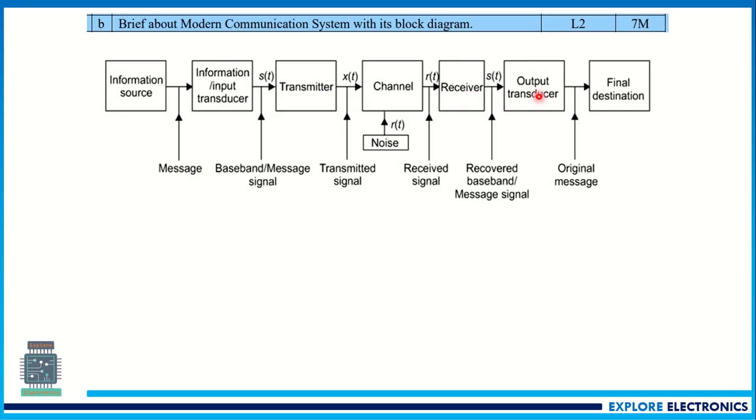Then receiver, output transducer, final destination. This needs to be explained. Each and every block needs to be explained briefly. This carries seven marks.